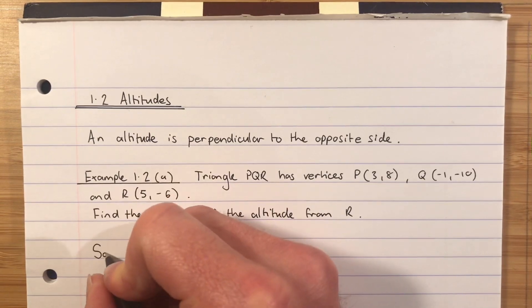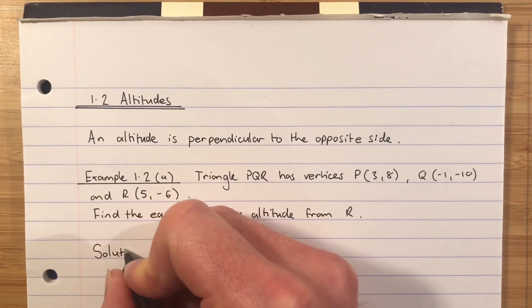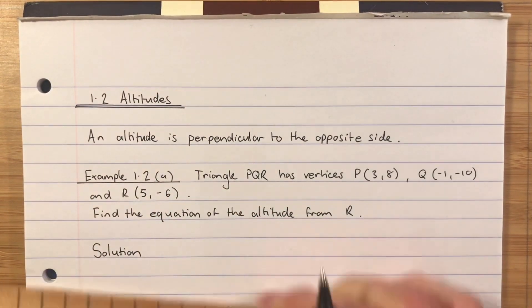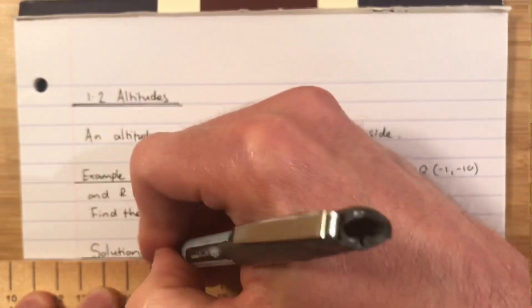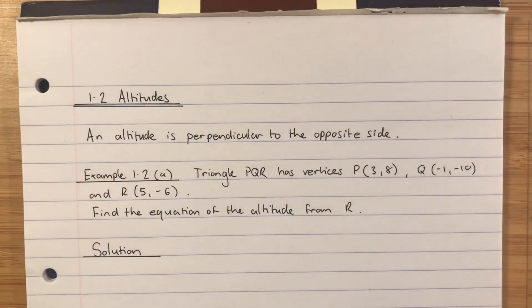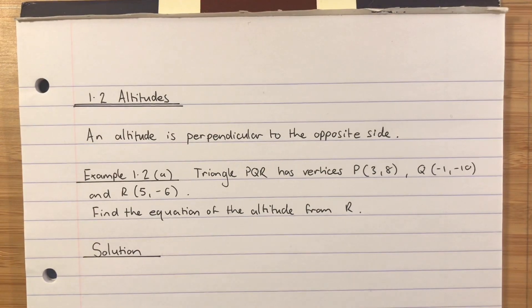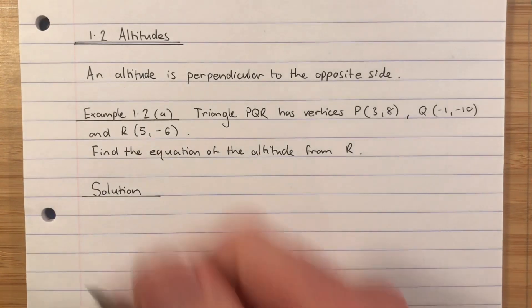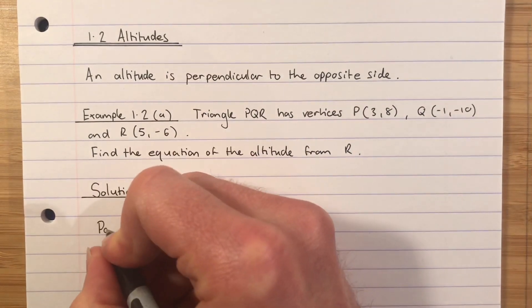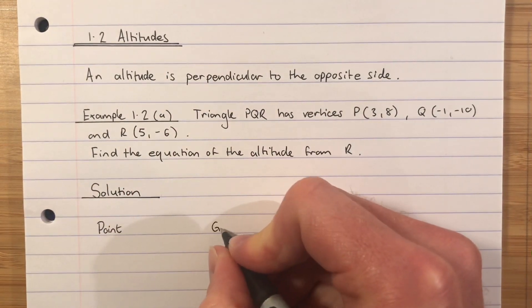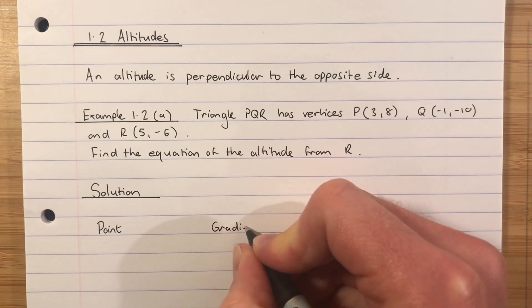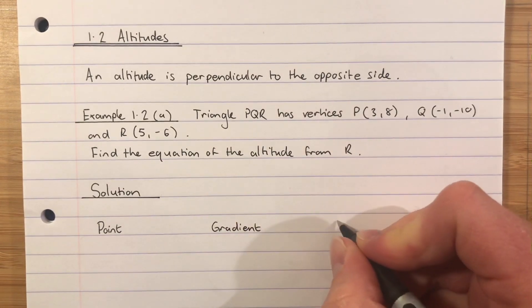Now let's go straight into the solution. Right, what's the question asking for? Find the equation of a straight line. If it's find the equation of a straight line, we want to have point, gradient, and equation.